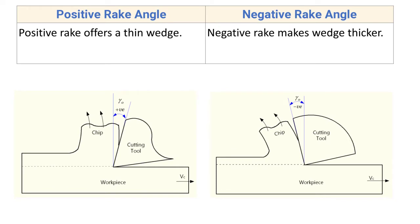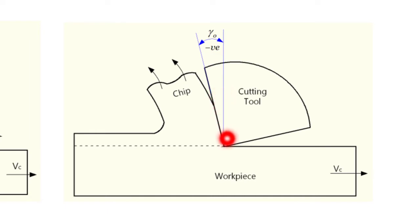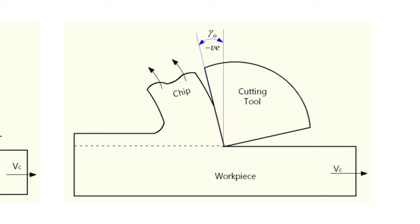For negative rake angle, negative rake makes the wedge thicker. Here is an example of negative rake angle — due to this negative rake angle, the wedge of the cutting tool is thick.